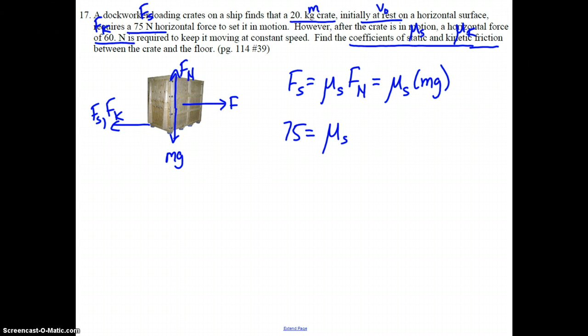This allows us to calculate for the coefficient because we know the static friction is 75 newtons. Mu_s is what we're looking for. We know the mass of the crate is 20. The acceleration due to gravity is 9.8. Solve for mu_s. Pause if you need a moment. And checking your answer, you should get 0.38, no units.